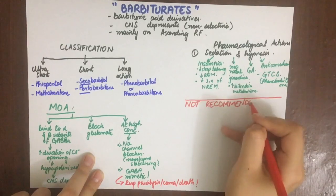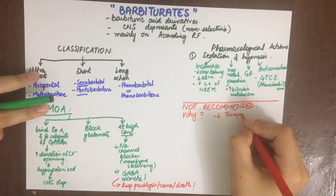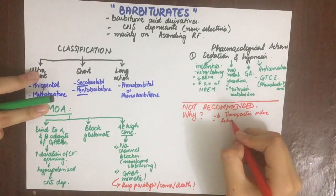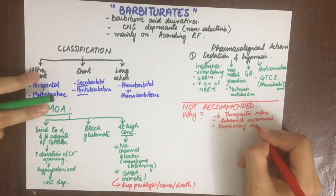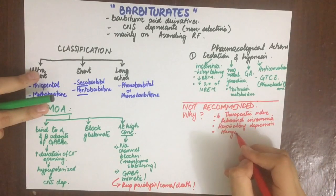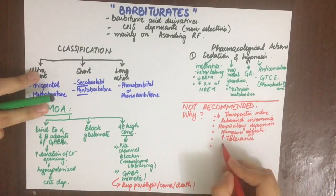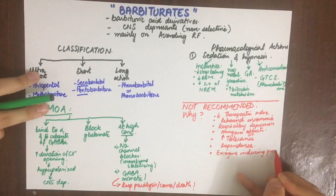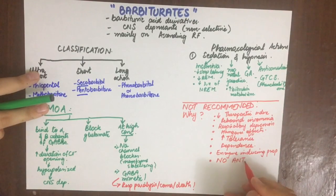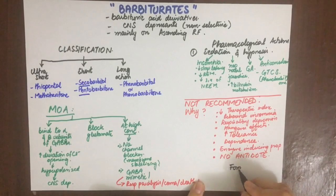Despite their sedation and hypnosis action, barbiturates are still not recommended for use in insomnia because they have a low therapeutic index — their plasma concentration needs to be constantly monitored. They cause rebound insomnia when the drug is discontinued. They also cause respiratory depression if toxic doses are reached, and can cause hangover effects. Physical dependence manifests as abstinence syndrome, and psychological dependence presents as craving. They also have enzyme-inducing properties.